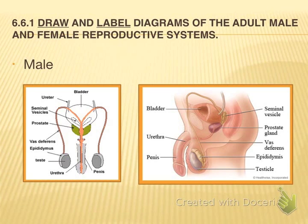A tube called the vas deferens carries sperm within the seminal fluid outside of the body during ejaculation. The vas deferens moves from the testes to the urethra, which runs through the penis and carries not only urine but also sperm. Before sperm leave the body, the urethra is sterilized to protect the sperm. The erectile tissue of the penis fills with blood and becomes rigid during an erection, allowing sperm to reach their destination.